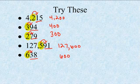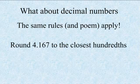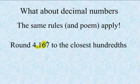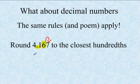Hopefully that was a review of how to round whole numbers. Now, what about decimal numbers? The same rules from the poem apply to decimal numbers as to whole numbers. If we want to round 4.167 to the closest hundredth, remember our hundredths place is right here. We need to look next door — our seven is five or more, so our six changes to a seven. It becomes 4.17.